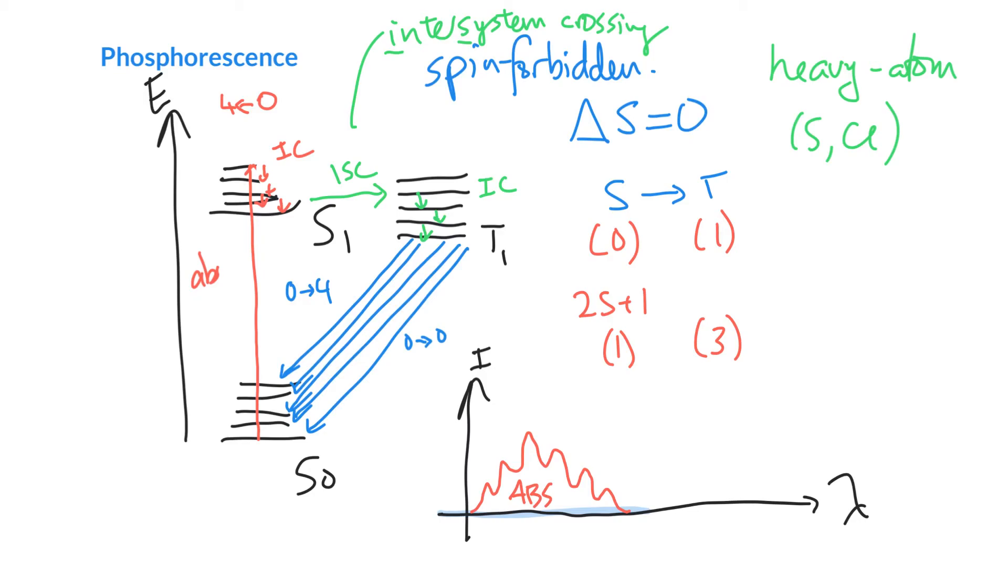But unlike fluorescence, where it basically returns exactly the same amount of energy, in phosphorescence, right, we're starting a little bit lower down. So we can see for absorption, we're going from here up to here. And then we dump some of that energy out. And when we come back down, this energy gap here is always going to be smaller than this energy gap here. So that means that the phosphorescence spectrum is going to be shifted significantly to the right.